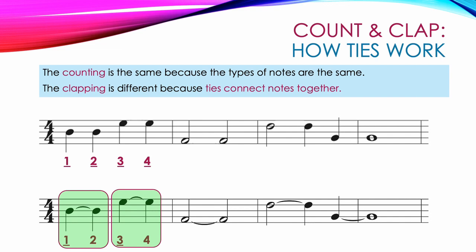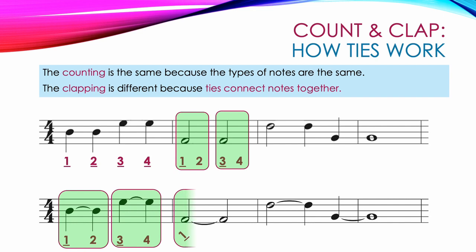In the second measure on the top, there are two half notes worth two counts each. The first half note: clap on count one, keep our hands together, and continue to count two. The second note: clap on count three, keep our hands together through count four. But in the bottom example, those two half notes are tied together into one longer note. So we clap on count one and keep our hands together without clapping and continue: two, three, four — one longer note.